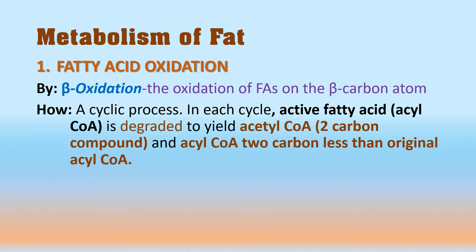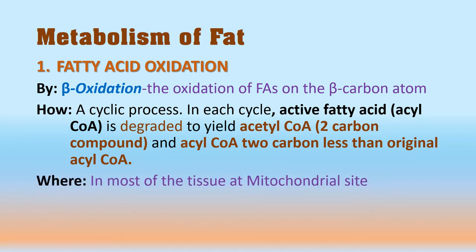After completion of one cycle of beta oxidation, there is production of a two-carbon acetyl-CoA and a fatty acid acyl-CoA that is two carbons shorter than the original. That fatty acid acyl-CoA then repeatedly passes through the beta oxidation process and yields more acetyl-CoA. For example, a 16-carbon fatty acid yields 8 acetyl-CoA, which enter the TCA cycle and yield energy.